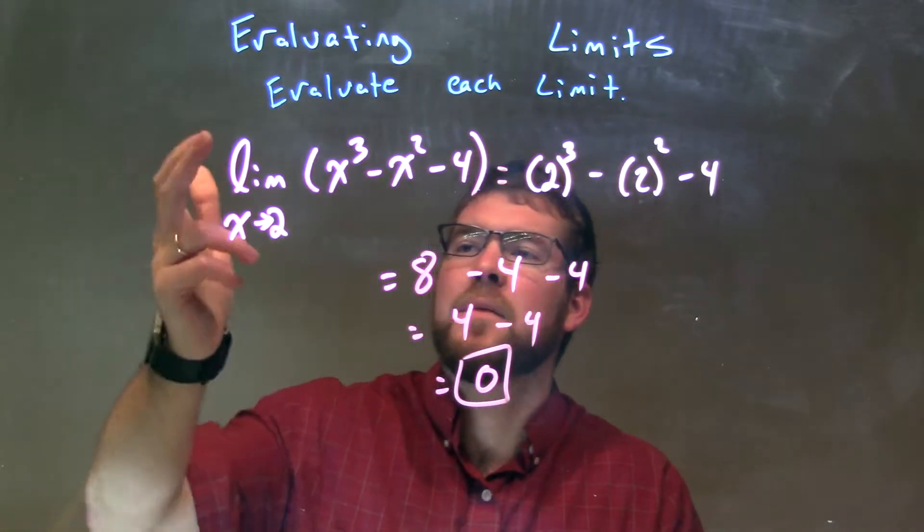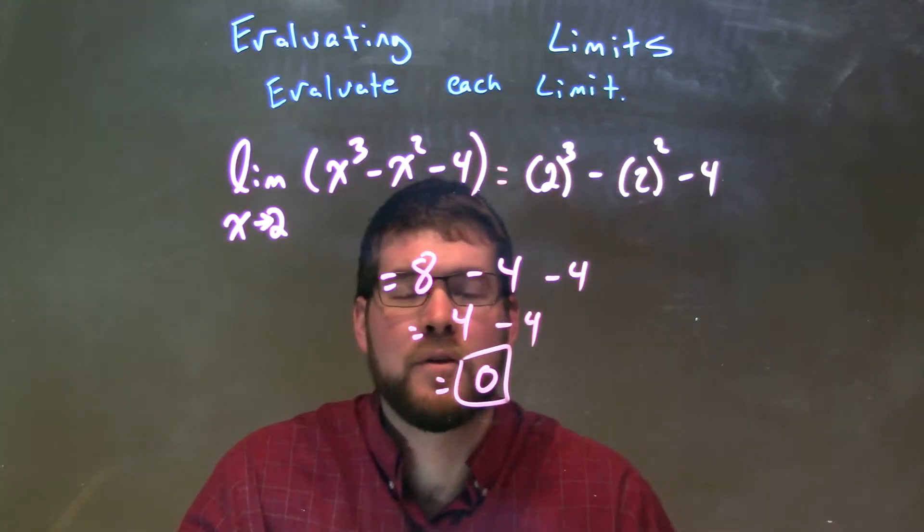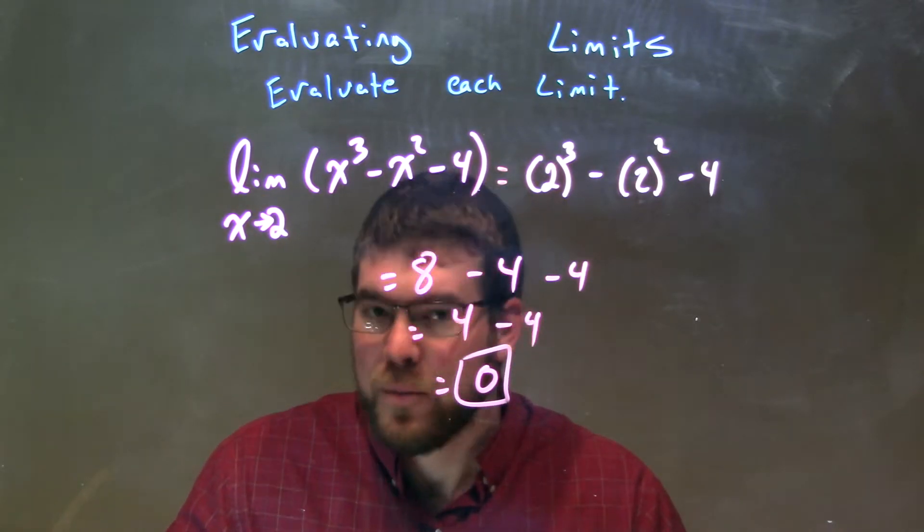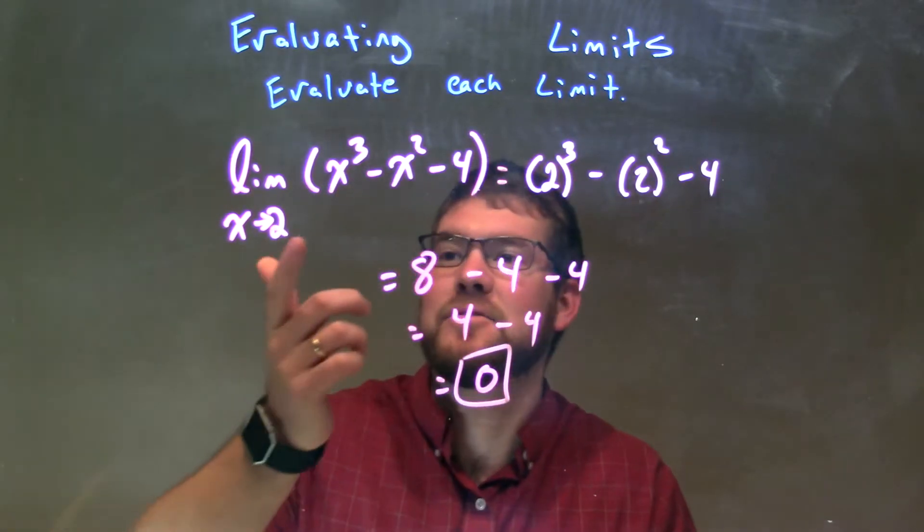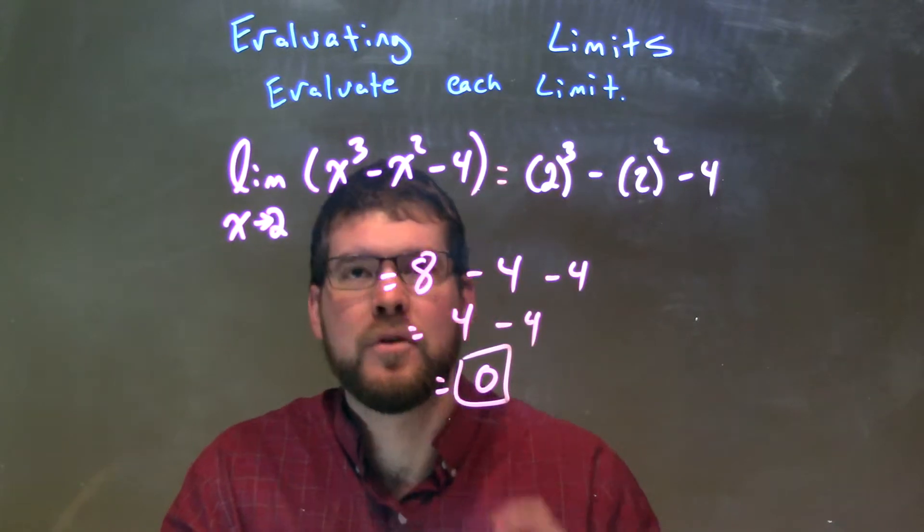So let's recap. We're taking the limit as x approaches 2 of x³ - x² - 4. Again, we have a polynomial. When we have a polynomial, we can plug it in wherever it exists, which exists here. The domain is all real numbers here.